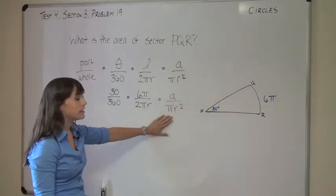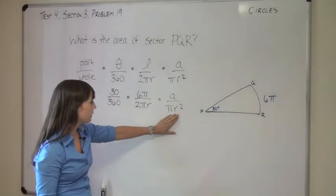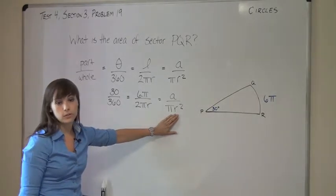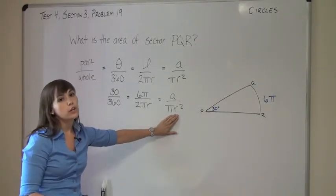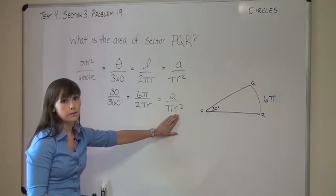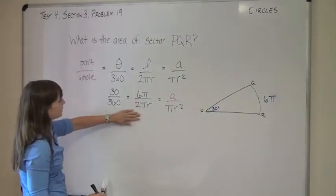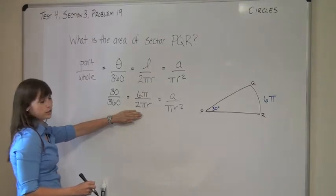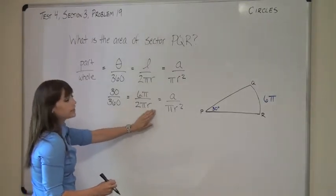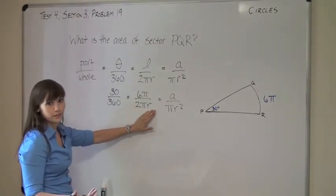And now you're ready to solve for A. Now, because A is in a ratio with R, the radius of the circle that you haven't solved for yet, you're not going to be able to immediately solve for A. You're going to have to solve for R first. Fortunately, if you use these two ratios equal to each other, the only unknown is R, and you can solve for R using those.